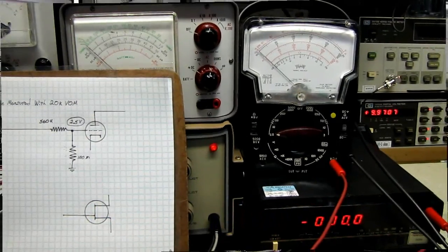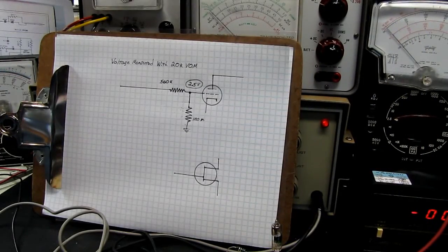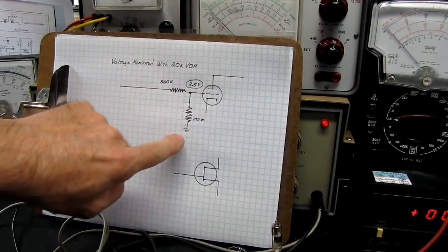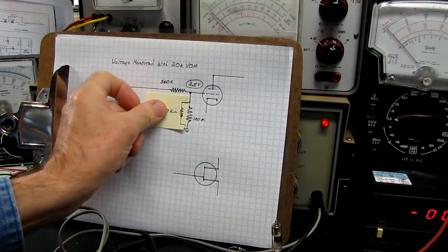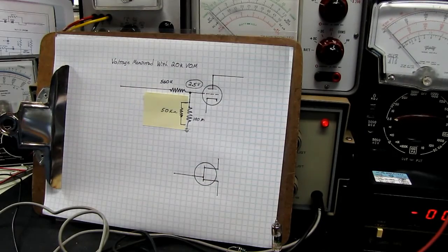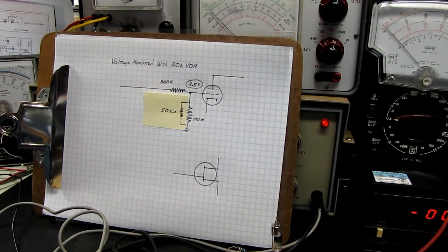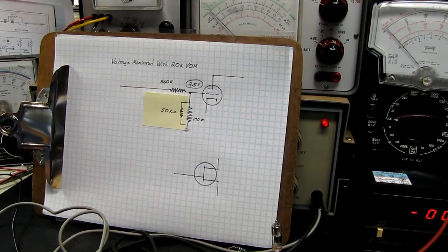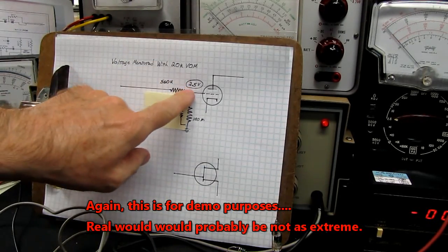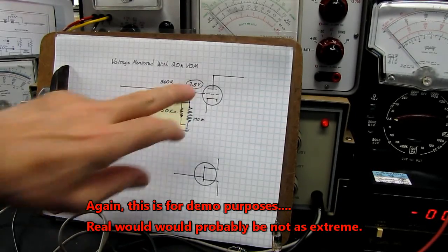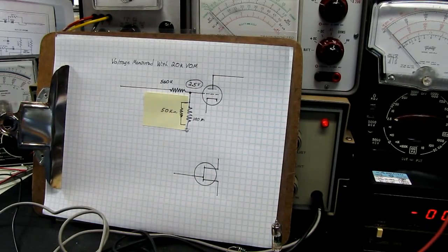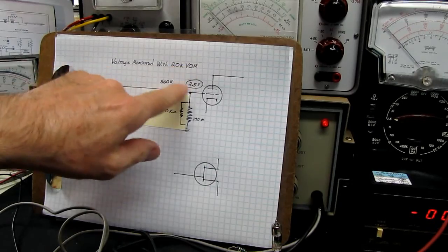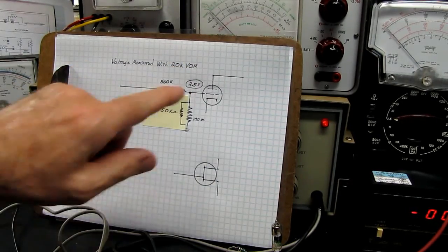Well, it's because of the impedance of this meter I am getting the correct reading. What's going on here is when we use our voltmeter to measure from this point to ground, we're essentially putting a 50,000 ohm resistor in parallel here.